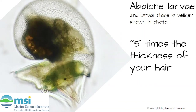The development stages of life are similar to the metamorphosis of a butterfly or the development of a frog. At the beginning stages of life, scientists have found larval abalone no bigger than five times the thickness of your hair. They swim around until they settle on the ground, where they start growing as abalone.